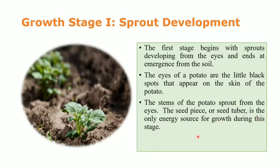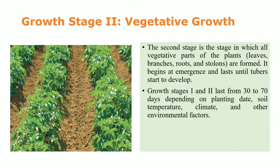The seed piece or seed tuber is the only energy source for growth during the sprout development stage. The second stage is vegetative growth, where vegetative parts of the plant develop — leaves, branches, roots, and stolons. It begins at emergence and lasts until tubers start to develop. Stages 1 and 2 together last from 30 to 70 days depending on planting date, soil temperature, climate, and other environmental factors.